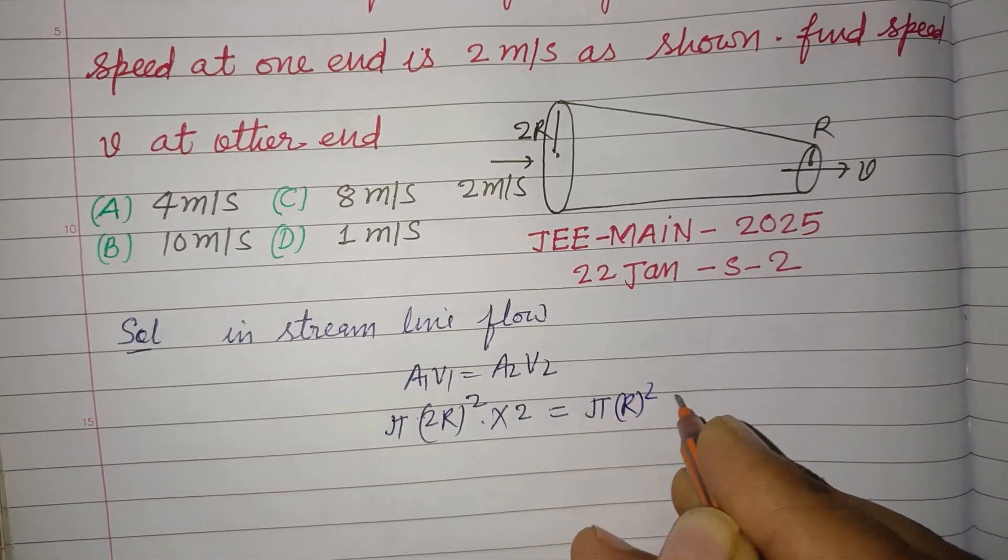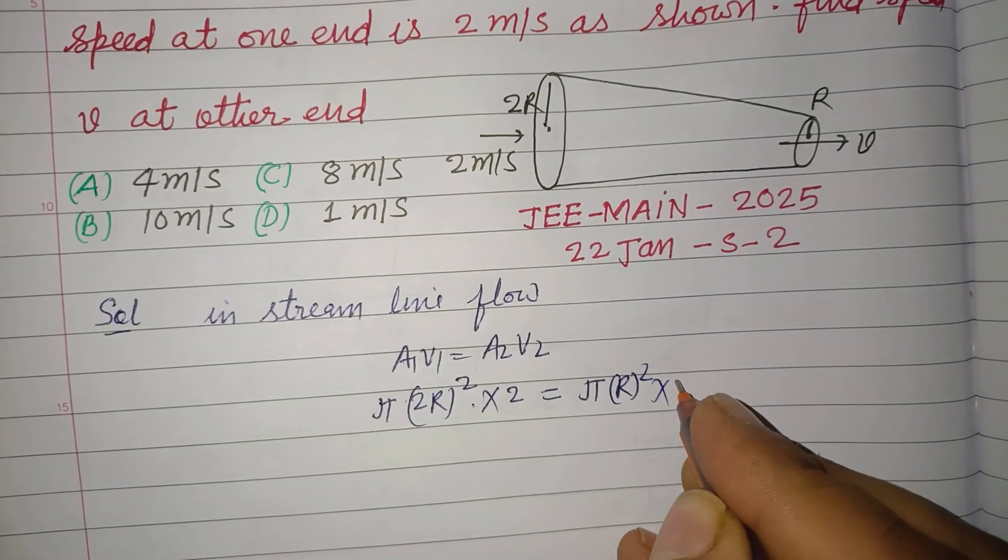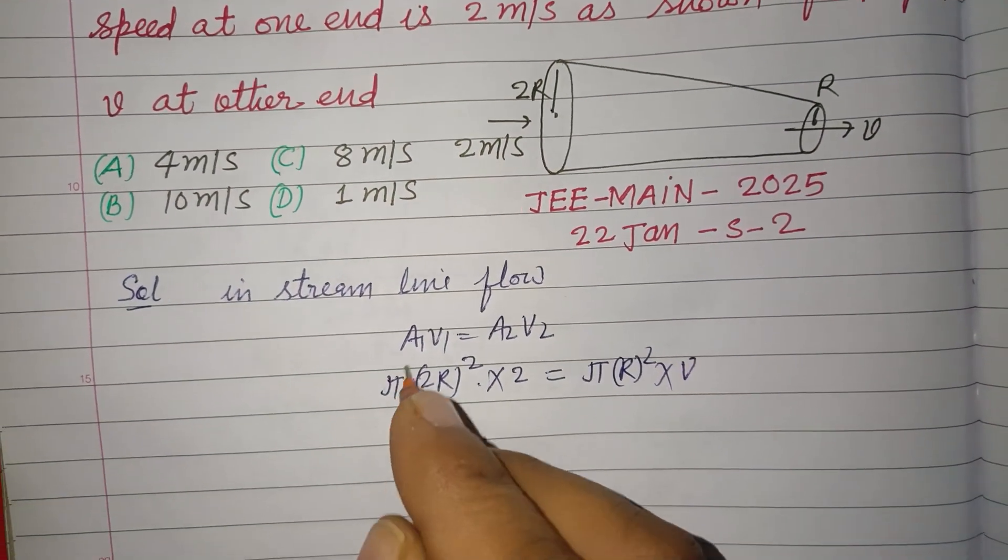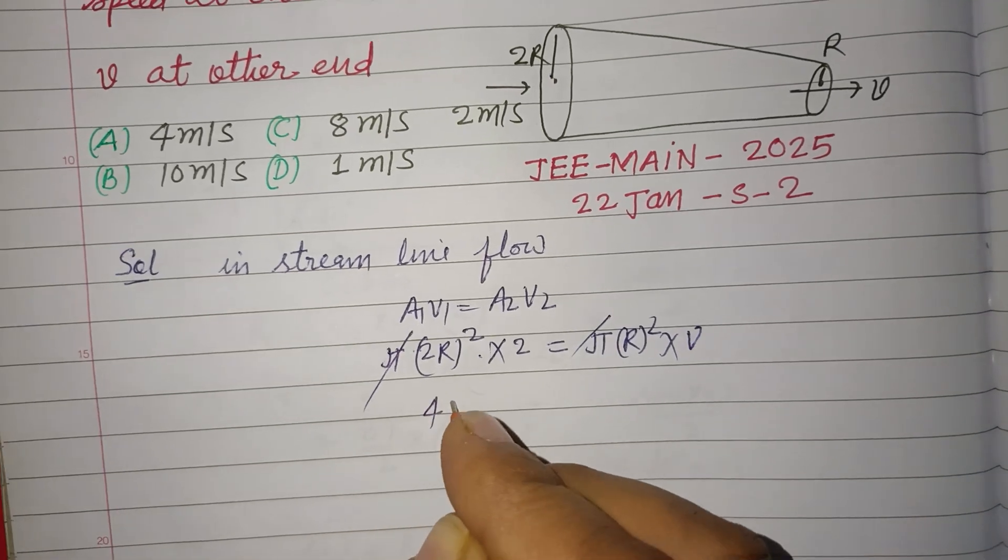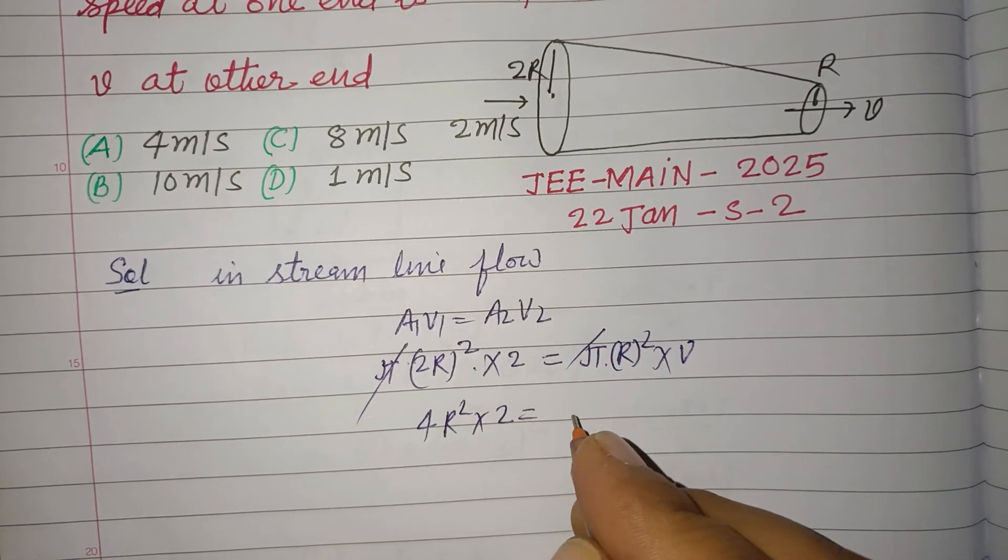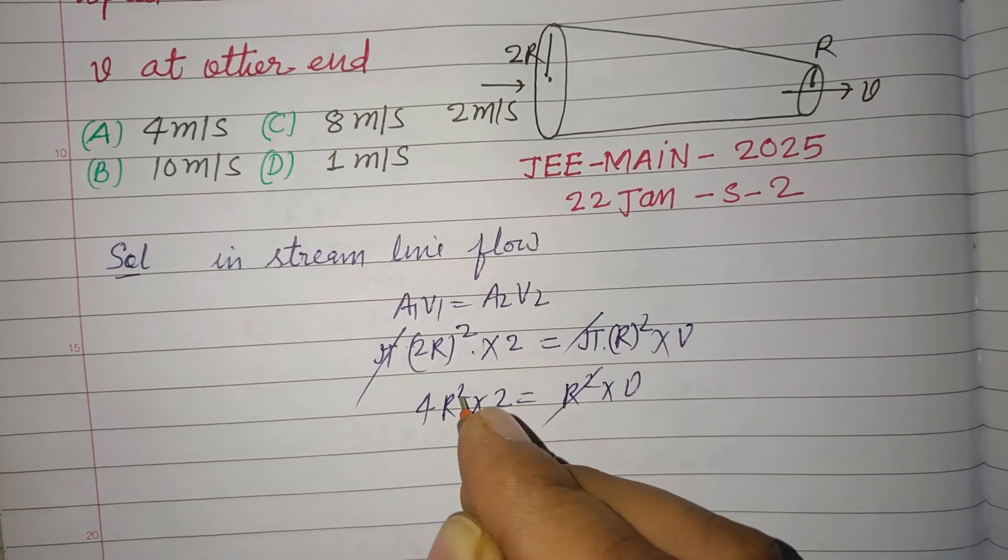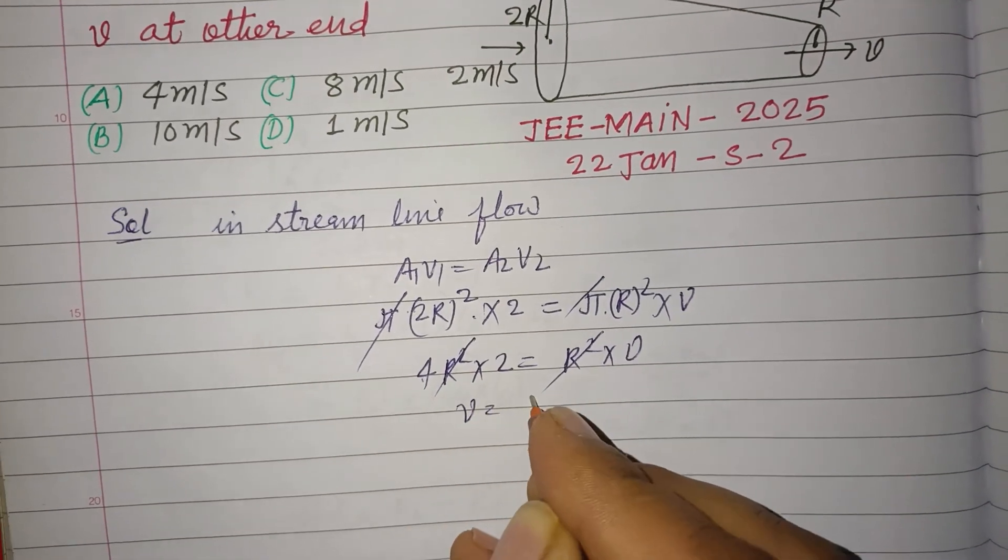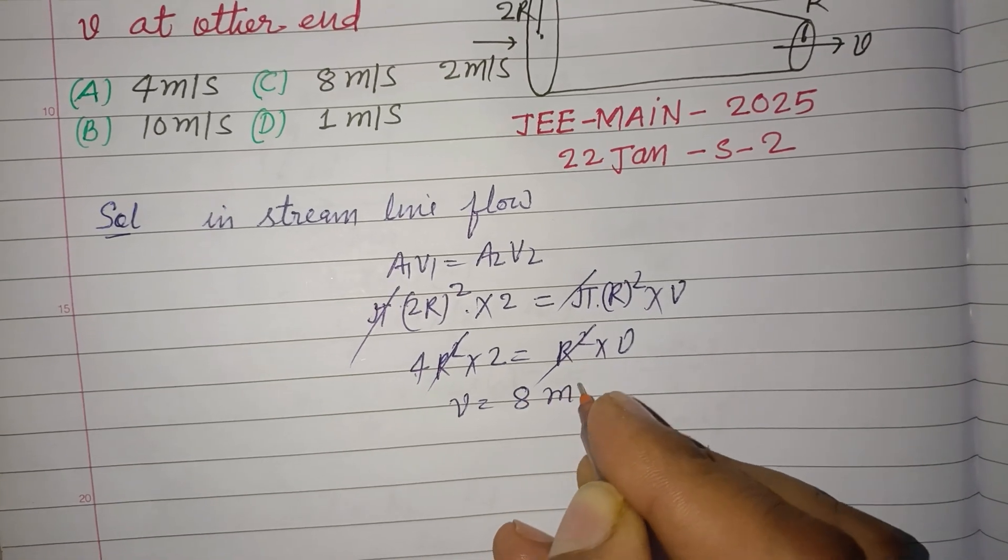So pi cancels here. 4r square into 2 equals r square into V. R square cancels. V equals 2 times 4, which is 8 meter per second.